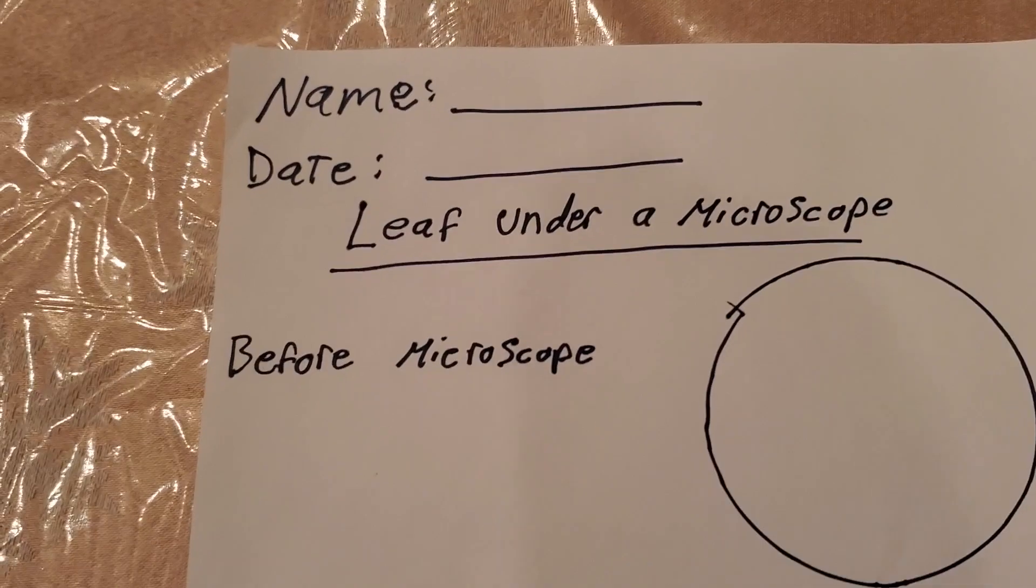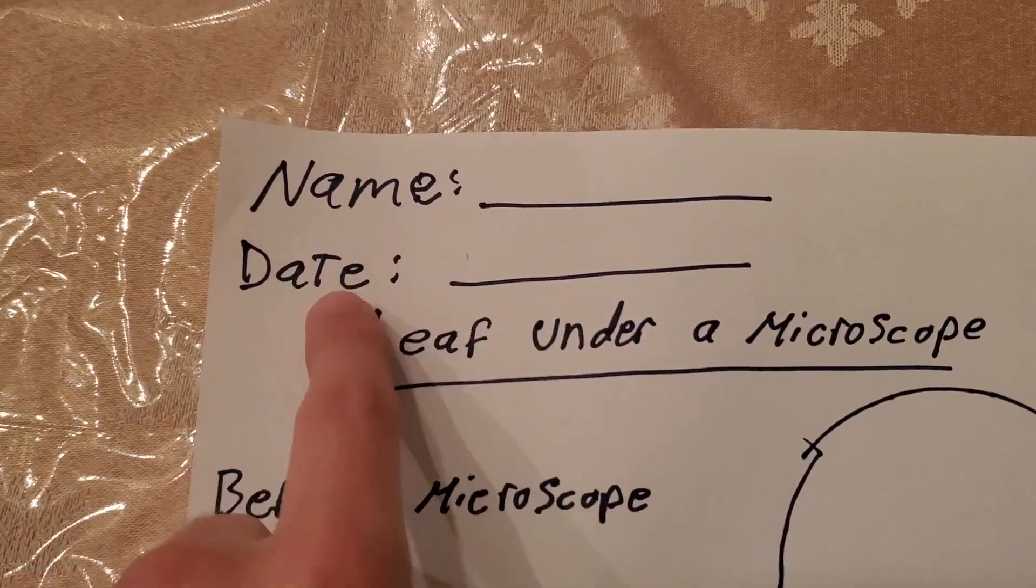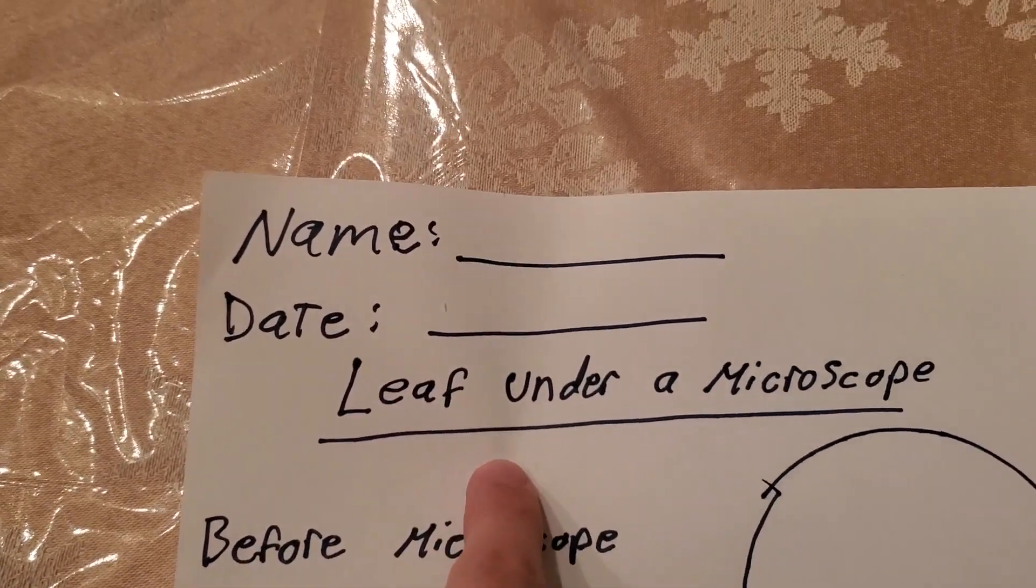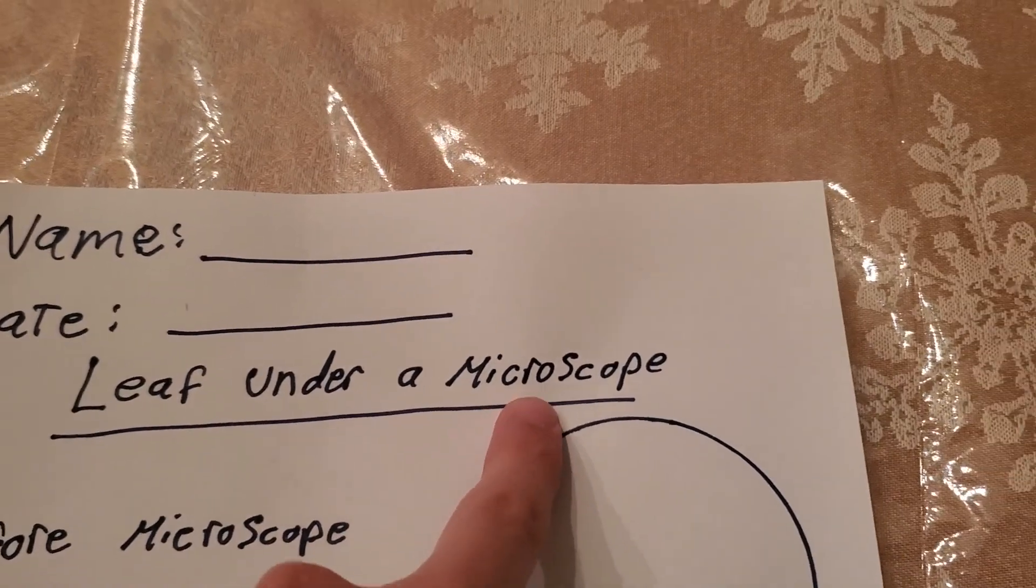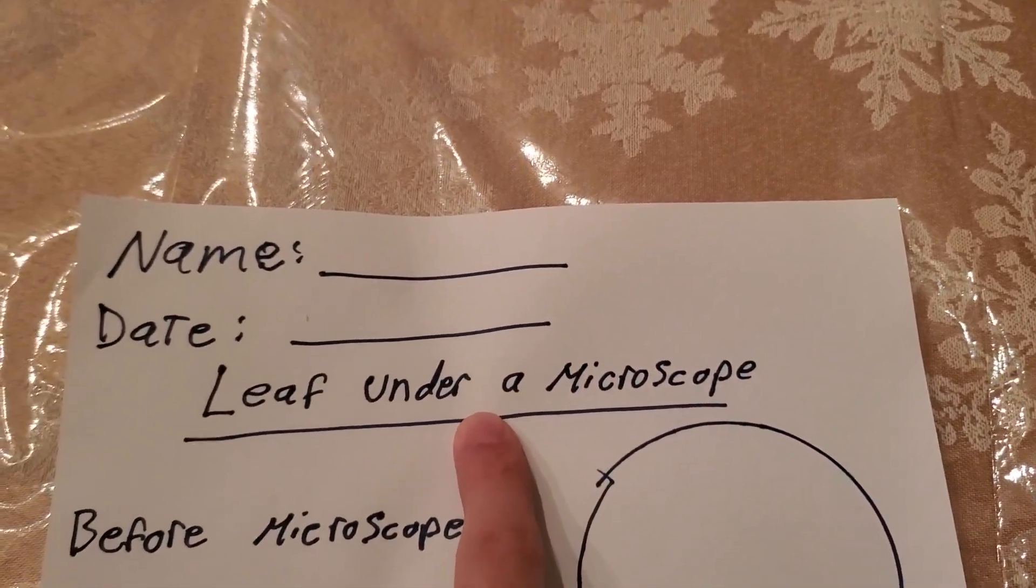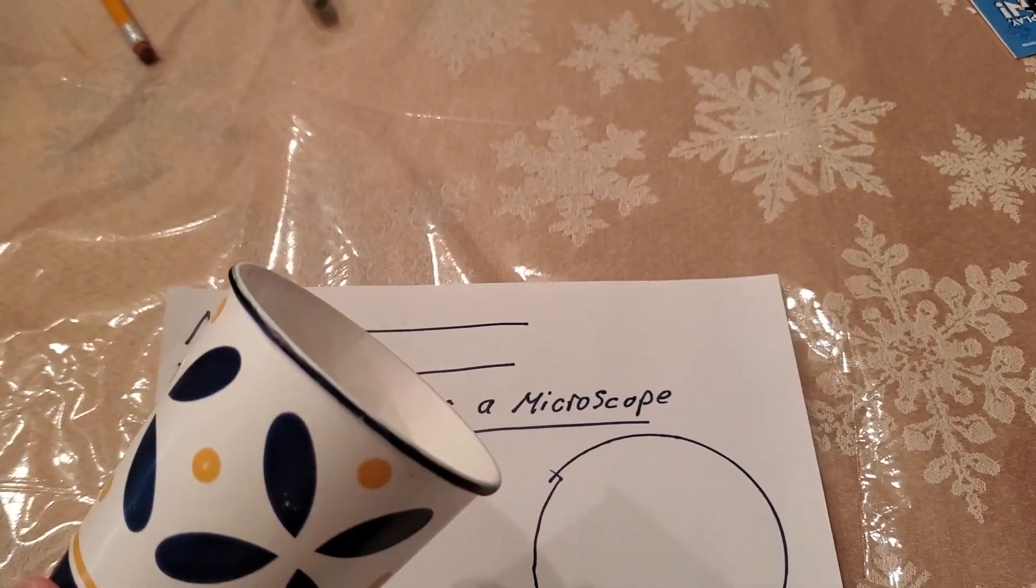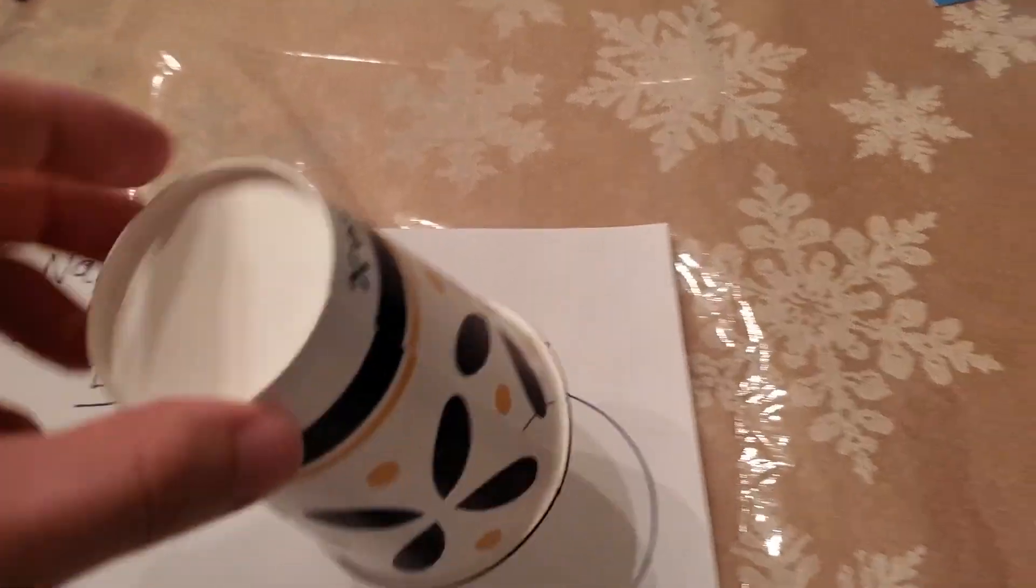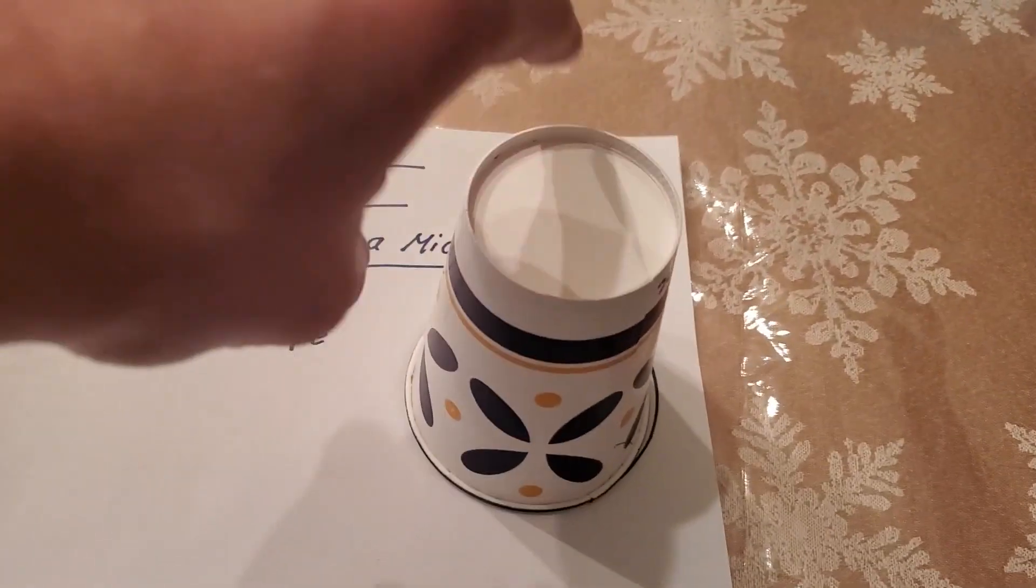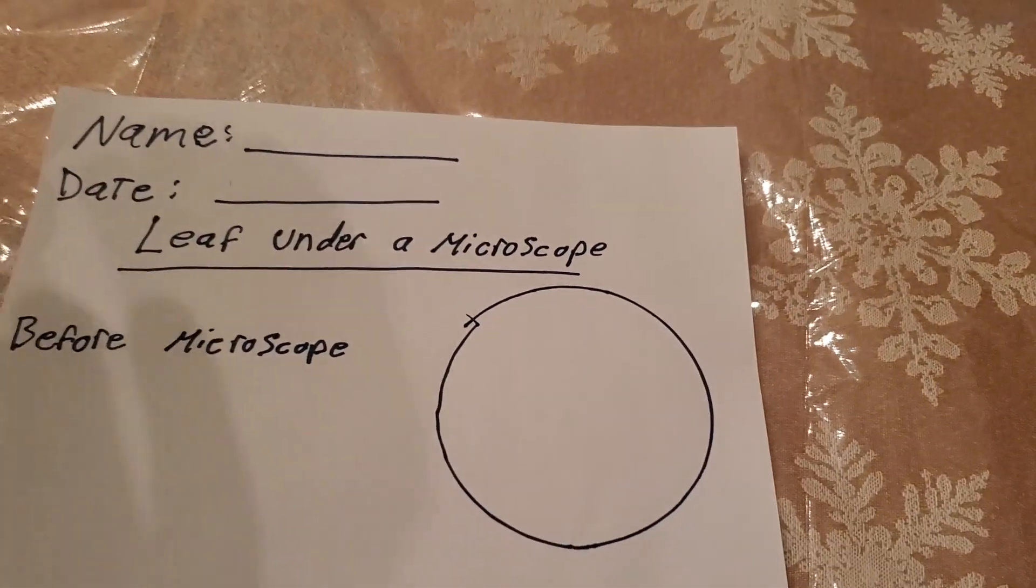Alright, so on just a piece of paper at the very very top you're going to write your name. You're going to write the date. I had trouble thinking of a fun title so I just called it Leaf Under a Microscope. Alright, that's going to be the title of it. And what I did for this next part was I just took a regular paper cup. Whatever cup you have at home that your parents are okay with you using is fine. It doesn't have to be exactly the same. And what I did was I put it on the paper and I drew a circle around it. And I made this really cool circle.